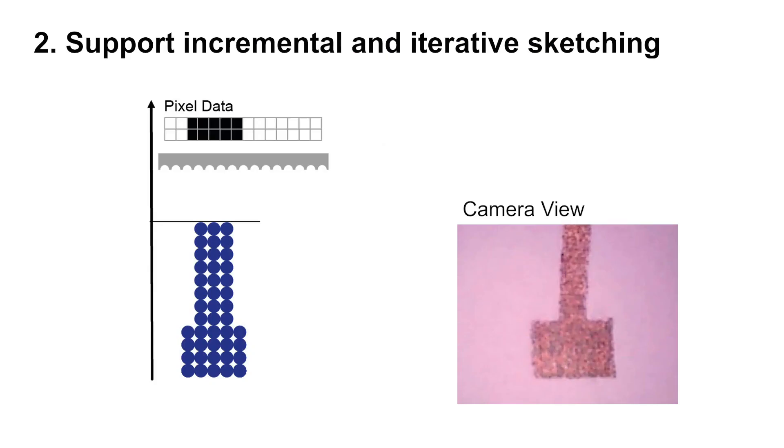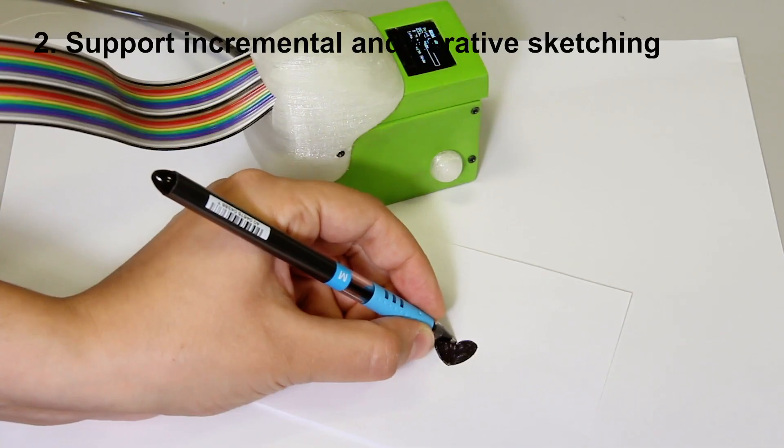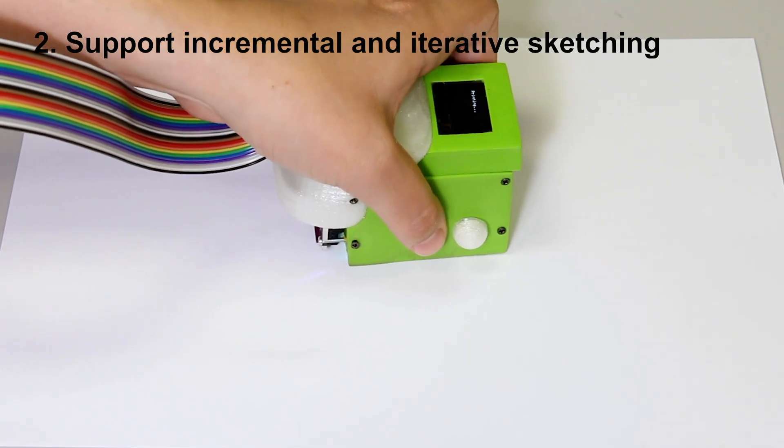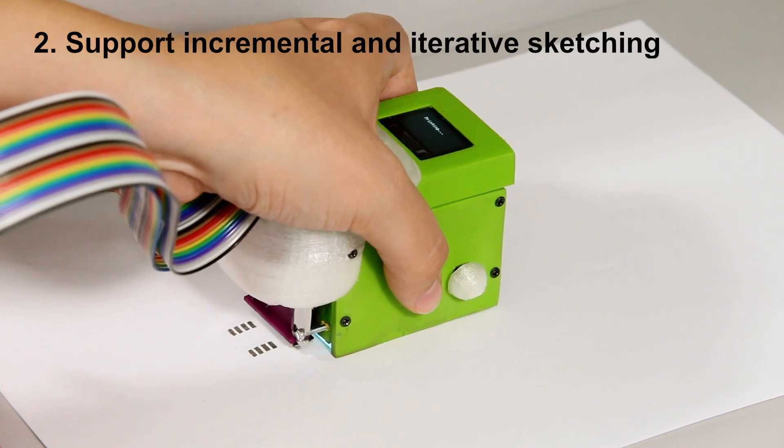To overcome this issue, printed sketch detects the pre-printed traces using the integrated camera and then the new data are shifted to align with the previous pattern. Using the camera also allows us to scan and print the desired shape or scan an existing component and print the footprints.